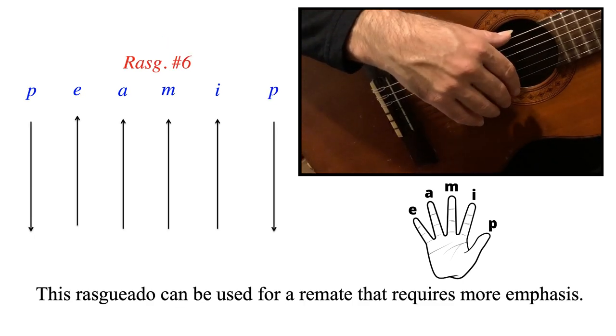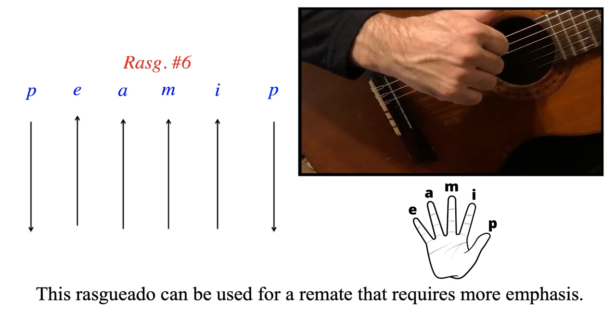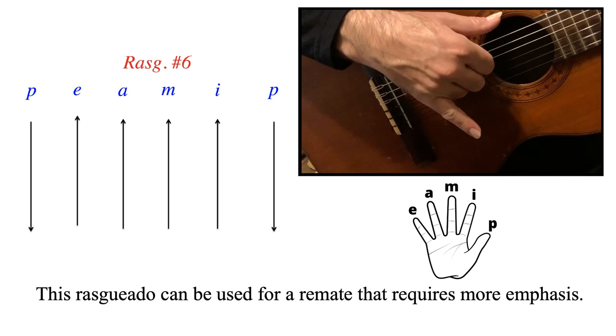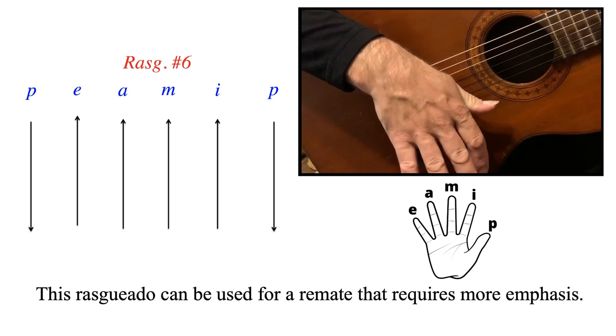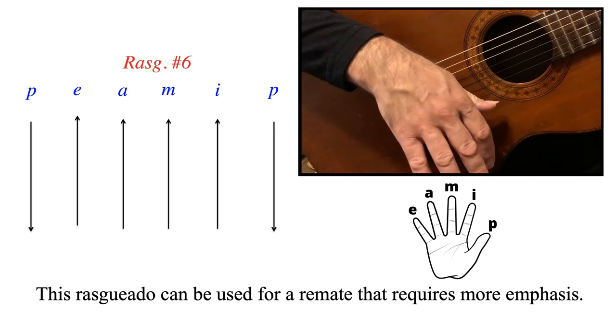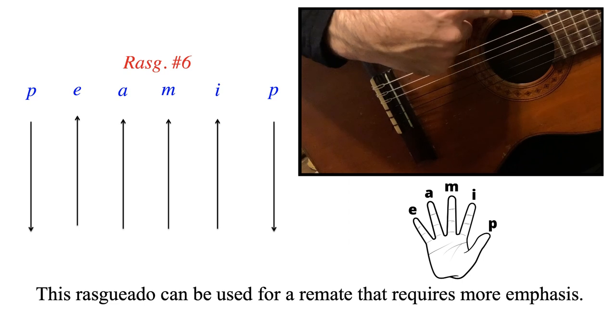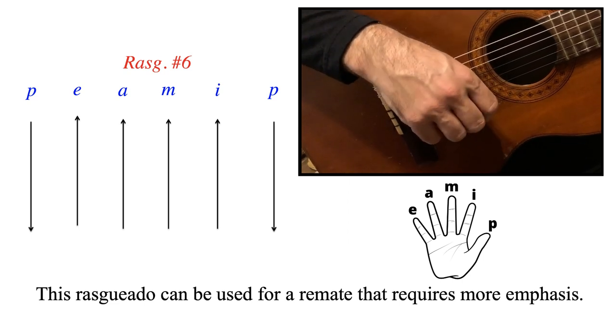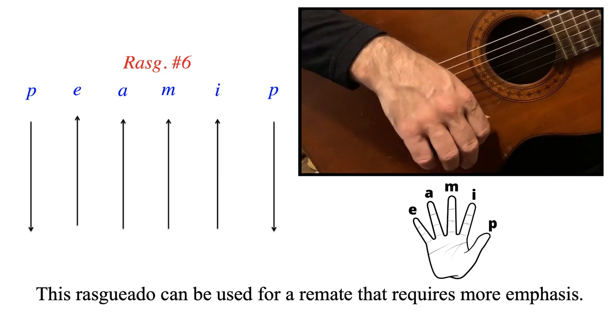Now rasqueado number 6. Now we've got P coming upwards in the very first note and the last one. Upward P, downward E, A, M, I. And once again, the rule of thumb, pun intended, is the thumb coming back up across all the strings, passing along the zone of the rosette, top portion. Once again, P, E, A, M, I, and downward, hand upward P.